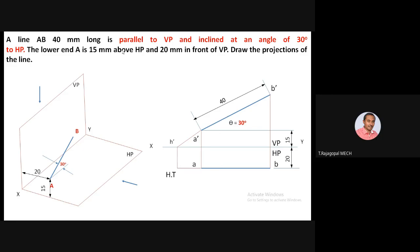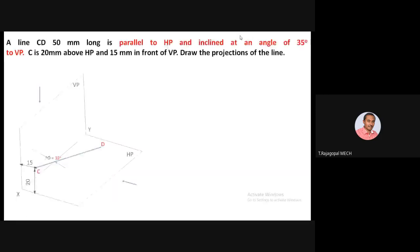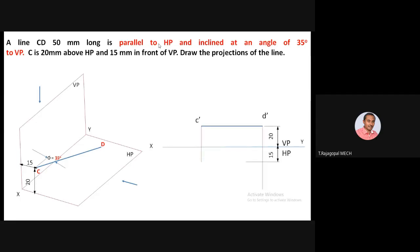Since the line is parallel to VP, there is no vertical trace. Another case: line parallel to HP and inclined at 35 degrees to VP. If it is parallel to HP, there is no horizontal trace. We need to identify the vertical trace only.